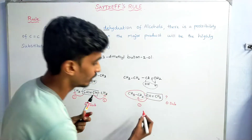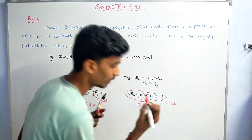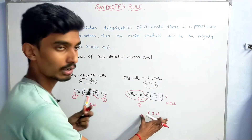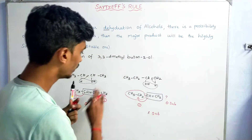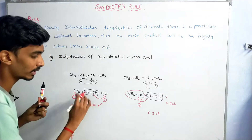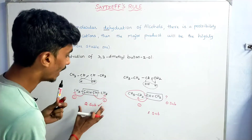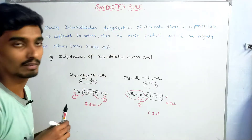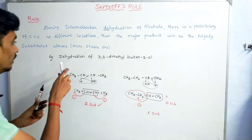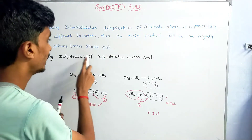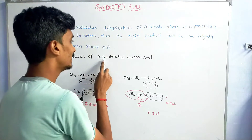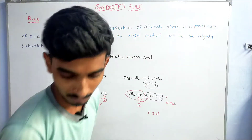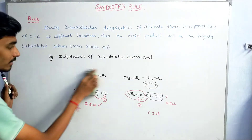So it is a totally mono-substituted alkene versus a di-substituted alkene. The more substituted the alkene, the more stable it is — this is Saytzeff's Rule. The major product is the more substituted, more stable alkene.